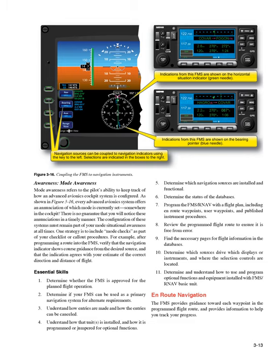6. Determine the status of the databases. 7. Program the FMS/RNAV with a flight plan, including en-route waypoints, user waypoints, and published instrument procedures. 8. Review the programmed flight route to ensure it is free from error. 9. Find the necessary pages for flight information in the databases. 10. Determine which sources drive which displays or instruments, and where the selection controls are located. 11. Determine and understand how to use and program optional functions and equipment installed with FMS/RNAV basic unit.